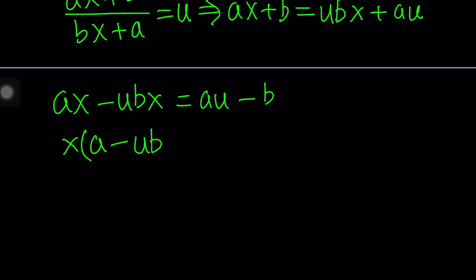Take out the x, that's going to give you a minus bu, or I guess bu would probably be more meaningful, a minus bu. Then set it equal to au minus b. We want to isolate x, so divide both sides by a minus bu. That's going to be (au-b)/(a-bu).